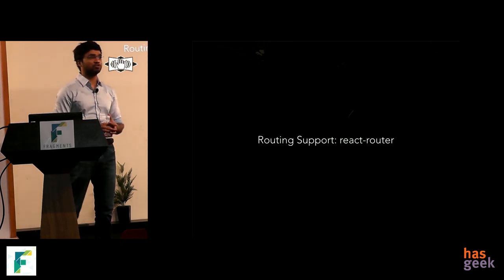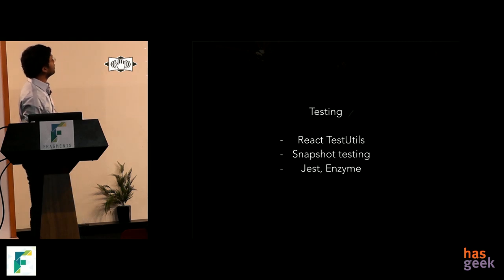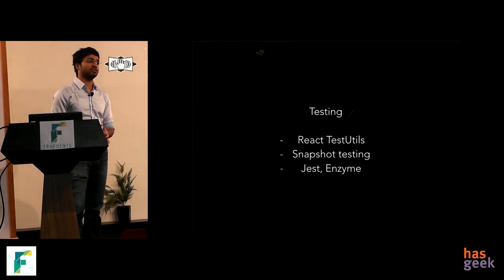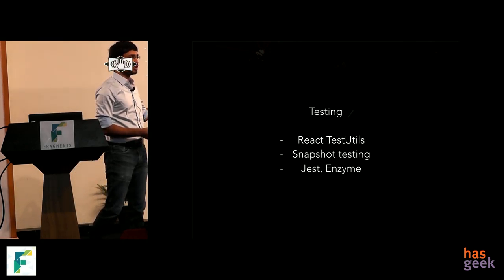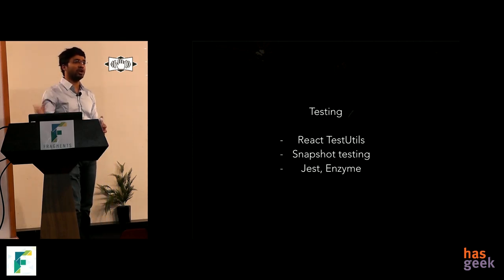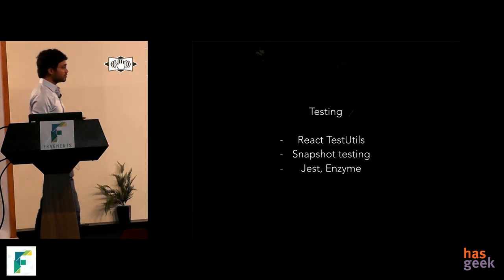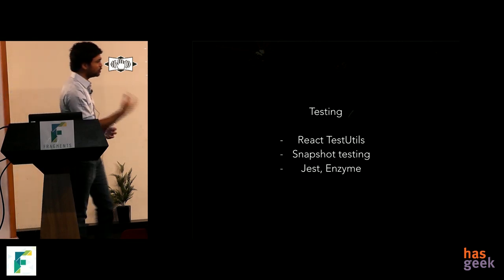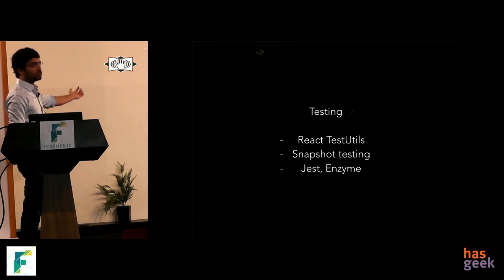React Router was introduced to allow page navigation, letting you display different components based on the state of the URL. For testing, React initially shipped with a testUtils library, where you could simulate rendering in the DOM and verify and assert how it got rendered. In the past couple of years, other ways of testing have emerged, like snapshot testing, as well as support for libraries like Jest.